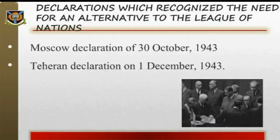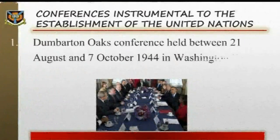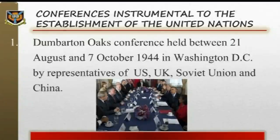The Tehran Declaration on the 1st of December 1943. All these conferences were instrumental to the establishment of the United Nations. These were: 1. The Dumbarton Oaks Conference, held between the 21st of August and the 7th of October 1944, in Washington D.C., by representatives of the US, the UK, the Soviet Union and China, which considered a set of proposals drawn up by the United States. It was here that the first formula for the Charter of the United Nations Organization was worked out by diplomatic experts.